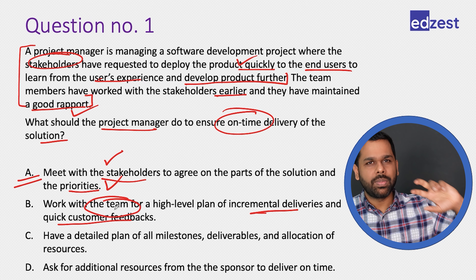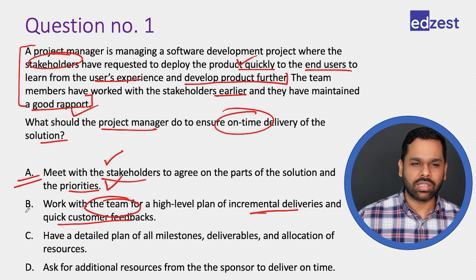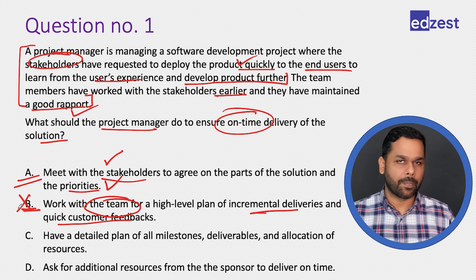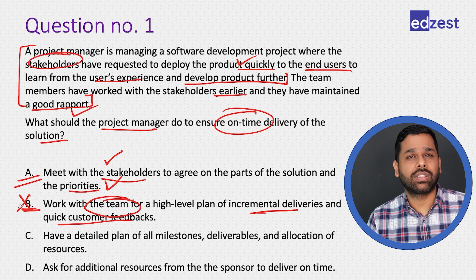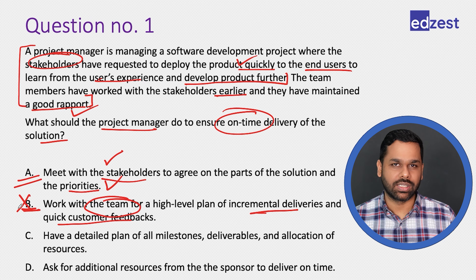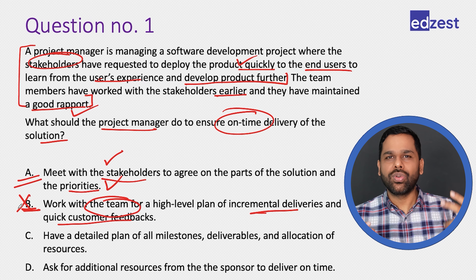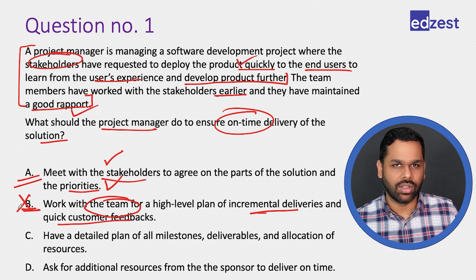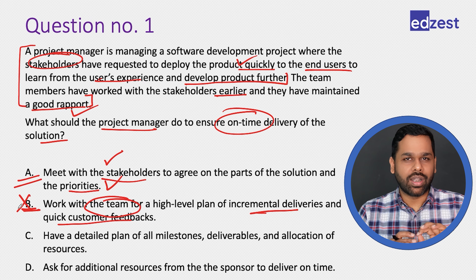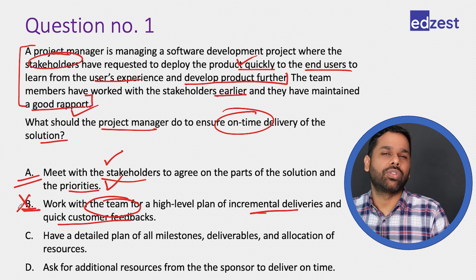Stakeholders have requested something, so we should involve them — they understand business-side priority while the team understands the technical side. Talking to stakeholders is better than working with the team alone without considering stakeholders. We eliminate B. Always eliminate only when you are 100% sure an option is not correct or when you have found a clearly better choice.